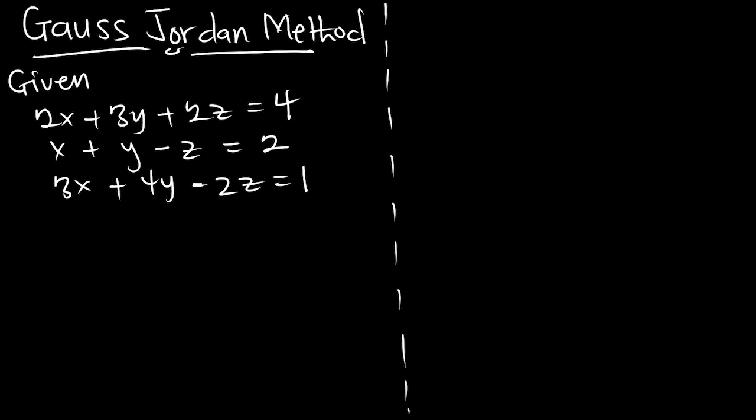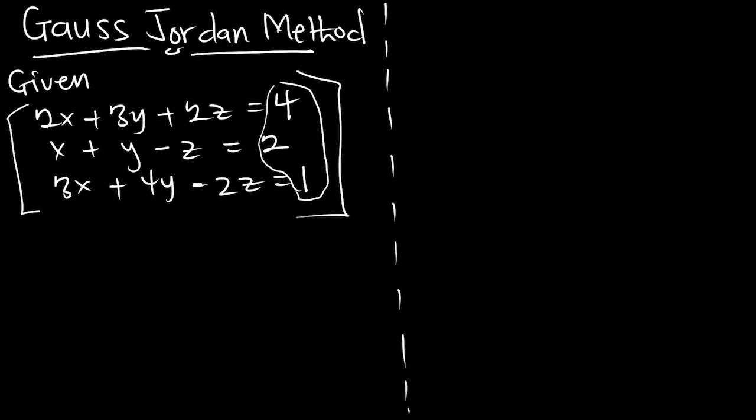For the Gauss-Jordan method, we are going to go through the same process as the Gaussian elimination method, but there are some small differences. First, when you are given the equations, you have to write your matrix out from the equations. Then you write the c part, which is the right-hand side. From these equations, we can write our matrix.